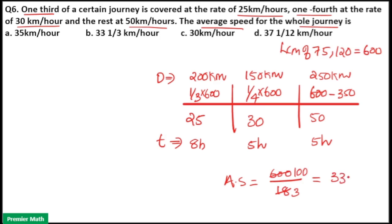100 by 3 is equal to 33.133, that is 33 and 1/3. So option B is your answer.